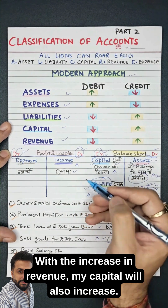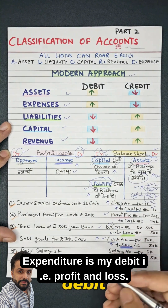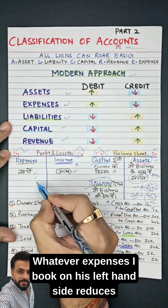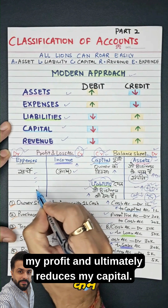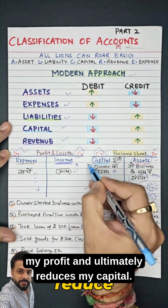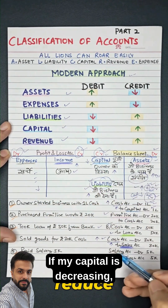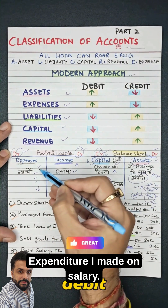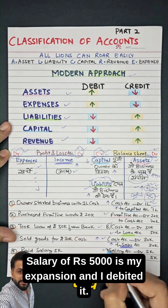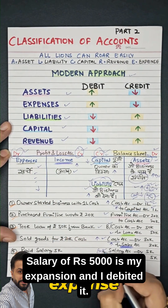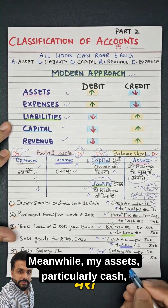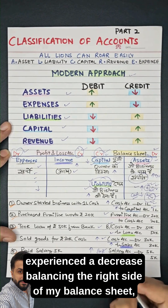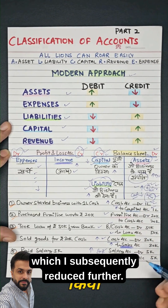With the increase in revenue, my capital will also increase. Expenditure is my debit — on the profit and loss account, whatever expenses I book on the left hand side reduces my profit and ultimately reduces my capital. If my capital is decreasing, then I debit it — so I will debit my expenses here too. For example, a salary expense of Rs 5,000 is my expenditure and I debited it. Meanwhile, my asset — particularly cash — experienced a decrease, balancing the right side of my balance sheet.